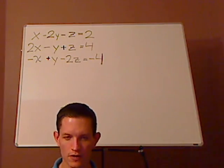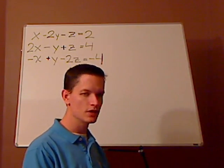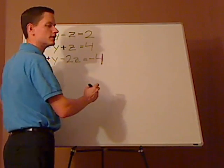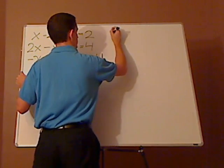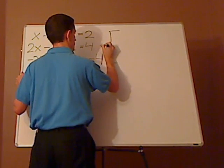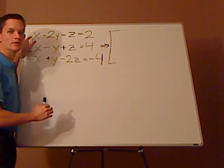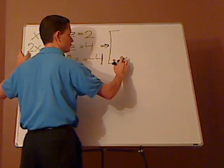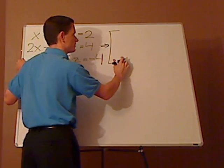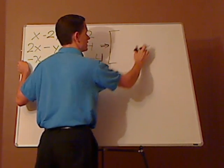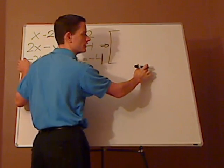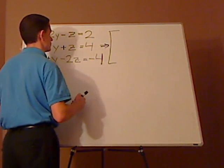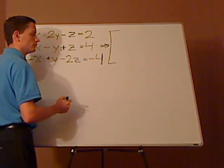Your first step when you do Gaussian elimination is you simply write it as an augmented matrix. The augmented matrix is where you just take each of these and look at the coefficients. So the first column would be the coefficients of the x's, second column the coefficients of the y's, then the coefficients of the z's, and then everything on the other side of the equal sign — everything that doesn't have a variable.